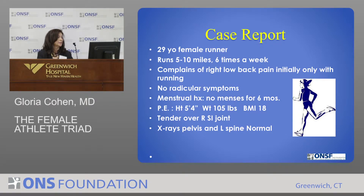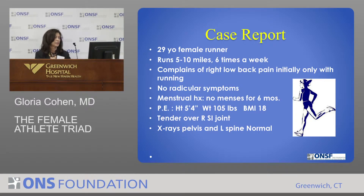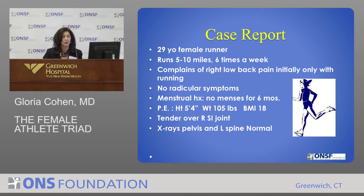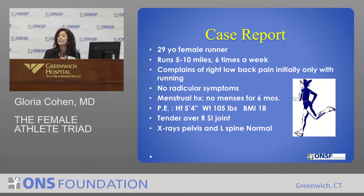She had no radicular symptoms. Menstrual history is something I also gather in my history taking — she had had no menses for six months and has never had a pregnancy. On physical examination, her height was 5 feet 4 inches and weight 105 pounds, giving her a body mass index of 18, which is low. Anything less than 18.5 is underweight; normal is 18.5 to 24.9.